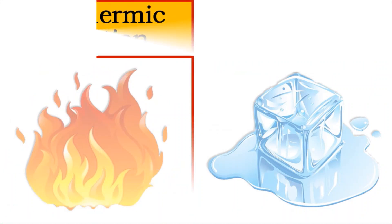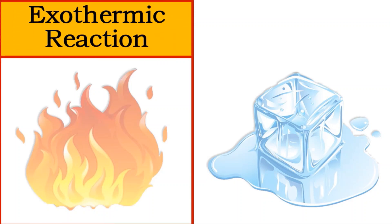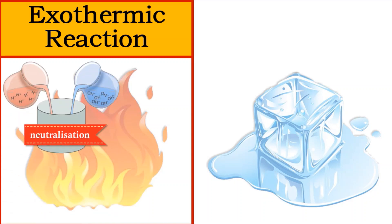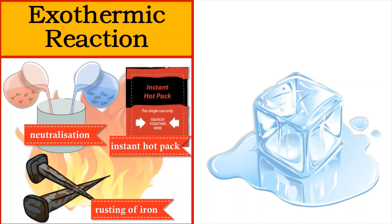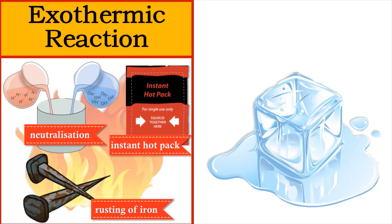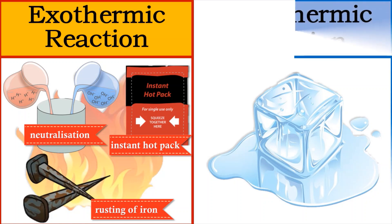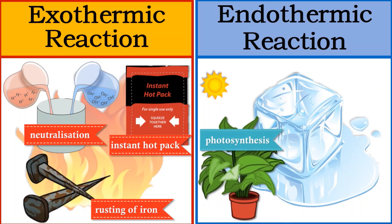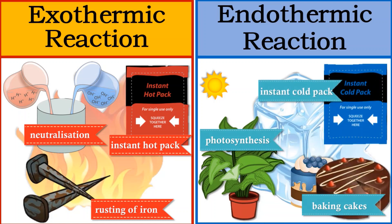Combustion is an example of an exothermic reaction because it releases heat to the surroundings. Neutralisation between acid and alkali, rusting of iron, and the instant hot pack are other examples of exothermic reactions. The melting of ice is an endothermic reaction because it absorbs heat to change from solid to liquid. Photosynthesis, baking of cakes, and the instant cold pack are examples of endothermic reactions.